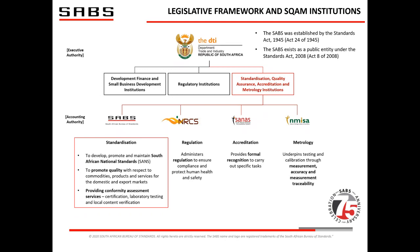There are four other entities forming part of the SQAM technical infrastructure. First is NRCS, the National Regulator for Compulsory Specifications, which administers regulations to ensure compliance with health, safety, and environmental protection. Then SANAS, the National Accreditation System, responsible for accrediting bodies that provide certification and testing services. And lastly, NMISA, the National Metrology Institute of South Africa, responsible for calibration, measurement accuracy, and traceability. All four entities are individually legislated and work closely together to ensure the efficient functioning of the economy.